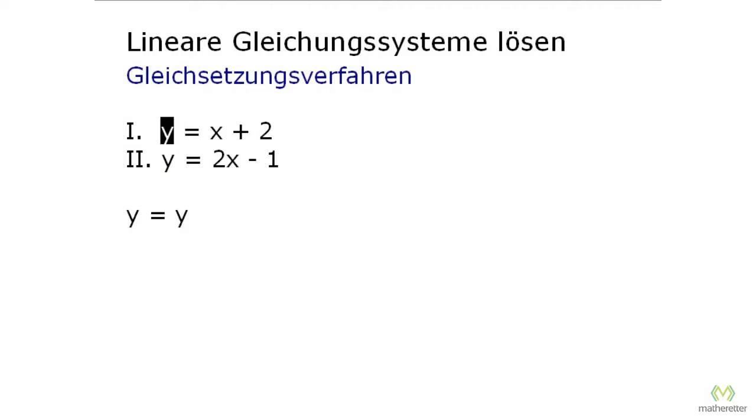And then we can see that this y here is x plus 2. This y is also here. So here we write x plus 2, because that's the same. And then we say that y equals 2x minus 1. Then this y is 2x minus 1, and now we can use equivalency to change this equation.